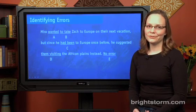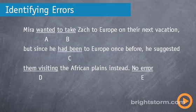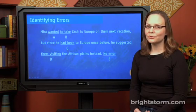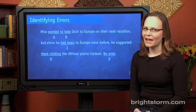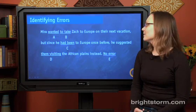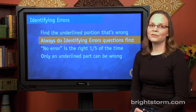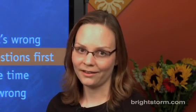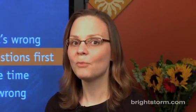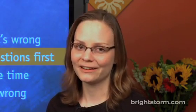The first type of SAT writing problem is identifying errors. You're going to be presented with four underlined words or phrases and a 'no error' option at the end. You just have to find the one that is grammatically incorrect or stylistically incorrect, which means it sounds really bad. You should do these first — they're pretty fast because they're short, and the portions of the sentence are underlined so they're actually telling you where to look for the wrong part.